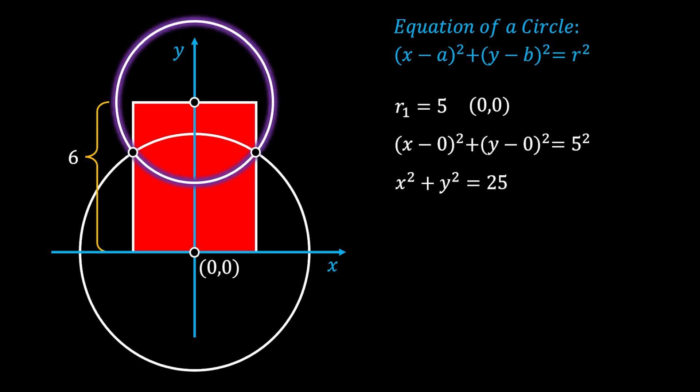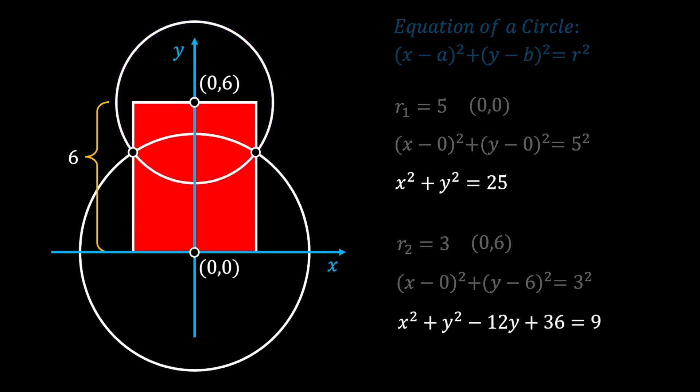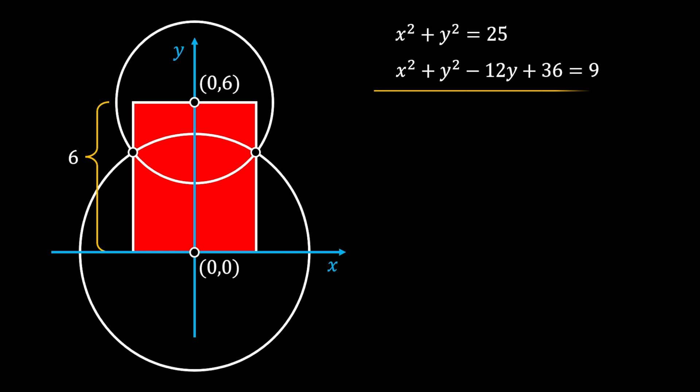Now for our smaller circle: the radius is 3, and the center is located on the y-axis at a height of 6, giving coordinates (0, 6). We substitute those values into the equation of a circle and after simplification we get the equation for the smaller circle. We will use these two circle equations to form a system of equations from which we will find the intersection points, labeled as P and Q.